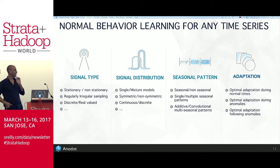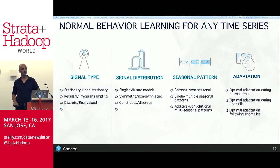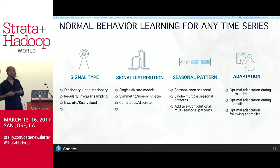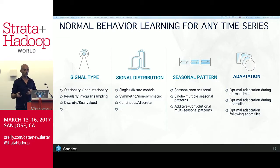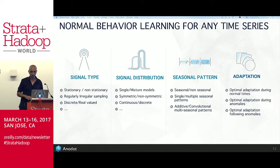Once you understand the signal types, you need to understand what signal distributions to apply to learn what is normal. Getting this wrong means lots of false positives, false negatives, or missed issues. You need to handle single-mode distributions, mixture distributions, symmetric or non-symmetric distributions, and continuous versus discrete ones. You need to identify these automatically and fit the right one to each KPI. Seasonal patterns are really critical — if you have a weekly seasonal pattern and don't account for it, you'll get garbage output.